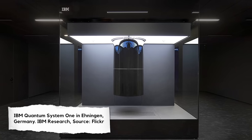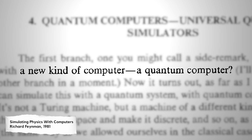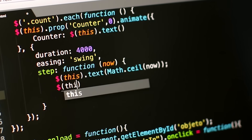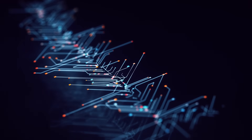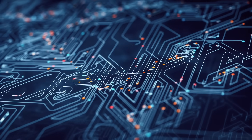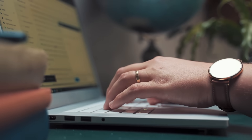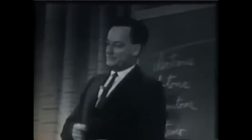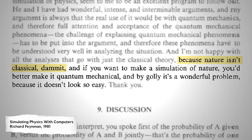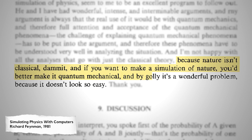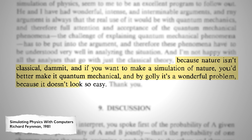Quantum computers aren't just good for simulating nature — they are also powerful at solving other problems that get exponentially more complex, such as optimization and cryptography. They have the potential to improve many different fields and industries drastically, but if the problem doesn't have exponential complexity you wouldn't need a quantum computer — you'd be better off sticking to regular computers. Feynman finished his speech by saying he's not happy with attempts to model physics using classical theory, 'because nature isn't classical, damn it, and if you want to make a simulation of nature you'd better make it quantum mechanical — and by golly it's a wonderful problem because it doesn't look so easy.'